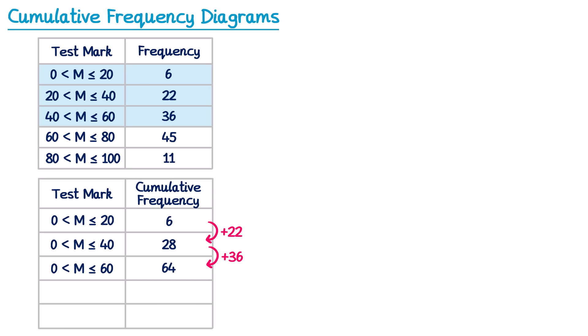We then repeat this process all the way to the end of the table. For the next group from 60 to 80 we have a frequency of 45, so the test mark now goes from 0 to 80 and we add on 45: 64 plus 45 is 109. For the final group from 80 to 100 the test mark goes from 0 to 100, and we add on the new frequency of 11: 109 plus 11 is 120.